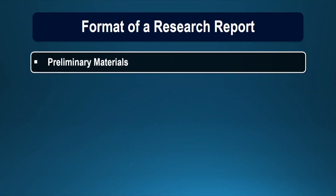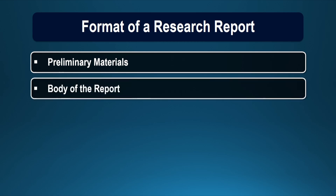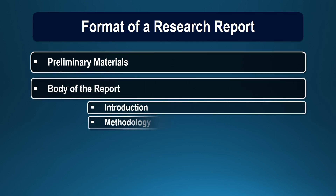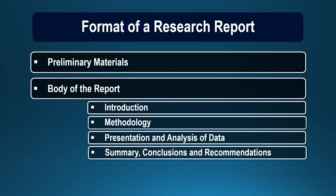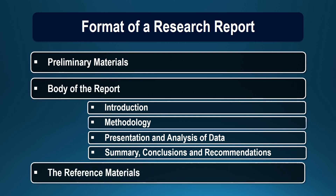Now we can have a look at the format of a research report. There are three sections in a research report. The first section contains the preliminary material, the second section contains the body of the report — which may include the introduction, the methodology, presentation and analysis of data, summary, conclusion and recommendation — and the last section contains the reference material.